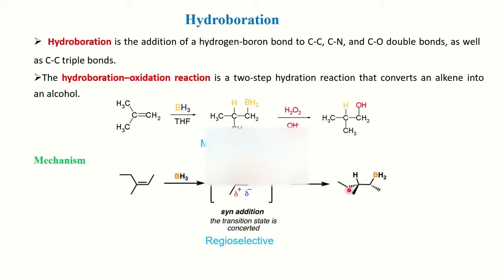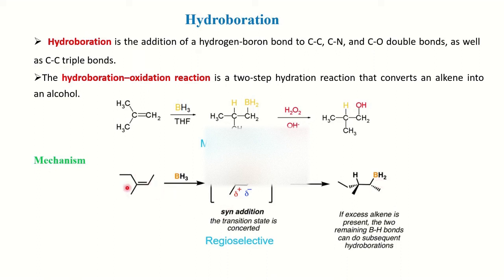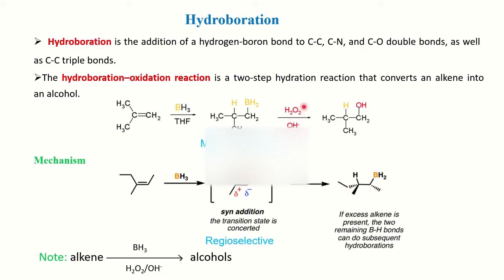The intermediate shows addition taking place in the same plane. If you have an excess of the starting material, the other two hydrogens of boron will also be replaced with organic groups, forming an organoborane as the product — if you don't have an oxidizing agent present. We will see this further in the mechanism.